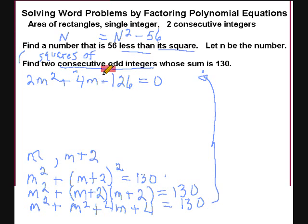2m squared plus 4m minus 126. Now of course we're going to factor. But did you notice that all these are divisible by 2? If you ever notice that all the terms, all the terms are divisible by a certain number, you can simplify the equation. I'm going to divide all of these by 2.